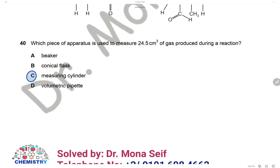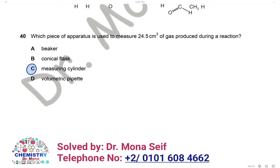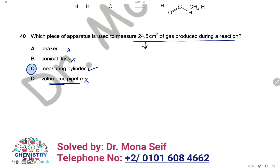Question 40: Which piece of apparatus is used to measure 24.5 cm³ of gas produced during a reaction? A beaker and conical flask have no scale. A volumetric pipette measures only one fixed volume and cannot measure decimal volumes. The correct apparatus is a measuring cylinder.